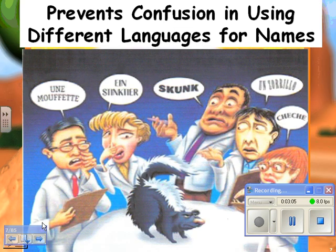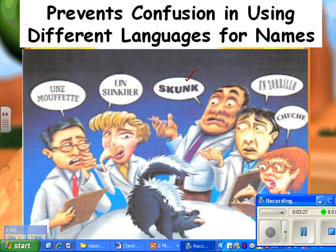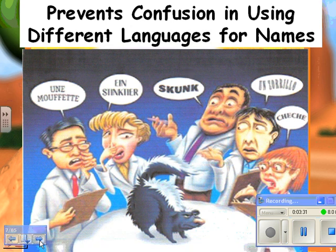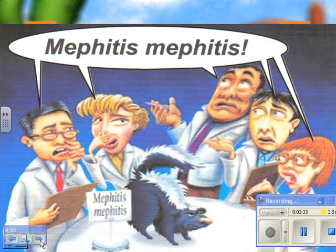For example, here's a skunk. These are all the different ways you might say skunk in various languages — skunk in English, something like 'unmuffete' in French, 'ein stinker' in German, 'ontario' or 'cheche' in others. But these folks don't speak each other's languages. So if you call it by its scientific name, like Mephitis mephitis or something like that, then everyone will know what you're talking about.